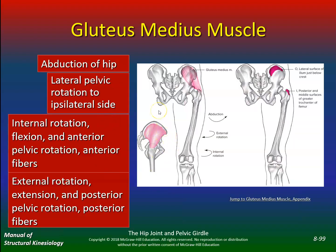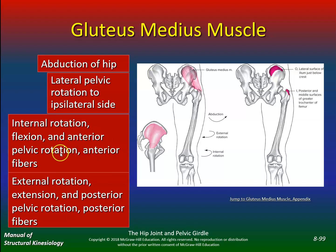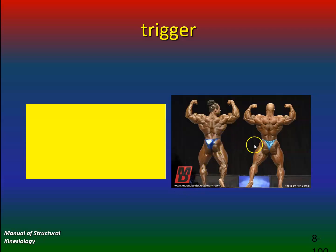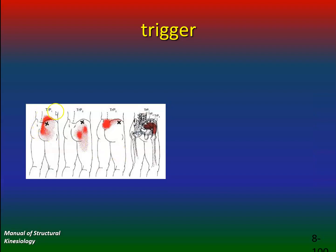Glute medius has anterior fibers and posterior fibers. Make sure you know what the anterior fibers do — they do internal rotation, flexion, and anterior pelvic rotation. The posterior fibers do external rotation, extension, and posterior pelvic rotation. So different exercises will target each set of fibers.